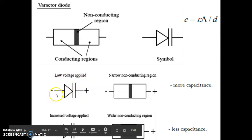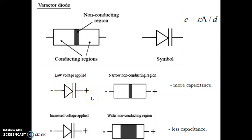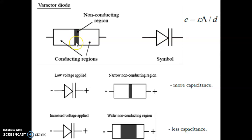When low voltage is applied — meaning anode connected to negative, cathode positive — the depletion region width will be narrower, going towards forward bias. The conducting region acts as one plate of a capacitor, the other conducting region acts as another plate, and they are separated by the non-conducting region acting as a dielectric. So a capacitance is formed. When low voltage is applied and the non-conducting region is narrower, the distance between the two plates of the capacitor reduces, and capacitance increases.